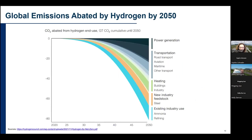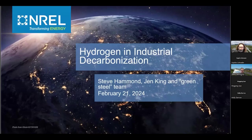Here we're showing cumulative global emissions abated by hydrogen by 2050. We see very low amounts of low-carbon hydrogen deployed between 2020 and 2025 as it ramps up globally, not contributing as much to global carbon abatement. But as we move toward 2050, we see a very rapid, almost exponential increase in deployment of low-carbon hydrogen, mostly for power generation and transport, but also for aviation, maritime uses, building heating, industry, ammonia for agriculture, refining, and steel — those hard-to-abate sectors. I'd like to pass it over to Steve to dive into a few examples of these hard-to-abate sectors and how hydrogen can be used.